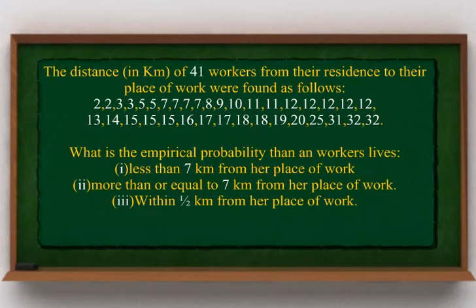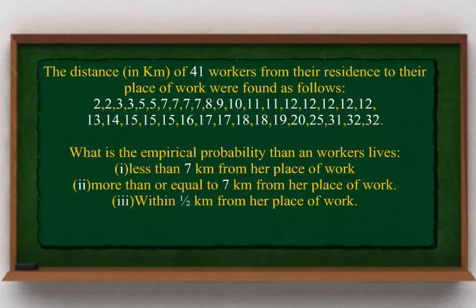The distances in kilometres of 41 workers from their residence to their place of work were recorded as: 2, 2, 2, 2, 3, 3, 5, 5, 7, 7, 7, 7, 8, 9, 10, 11, 11, 12, 12, 12, 12, 12, 12, 12, 13, 14, 15, 15, 16, 17, 17, 17, 18, 18, 18, 19, 20, 25, 31, 32, 32, 32. Find the empirical probability that a worker lives: (1) less than 7 km; (2) more than or equal to 7 km; (3) within half km from her place of work.